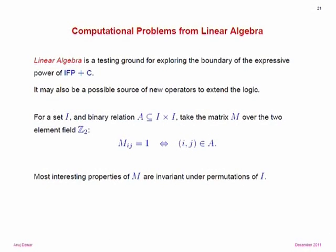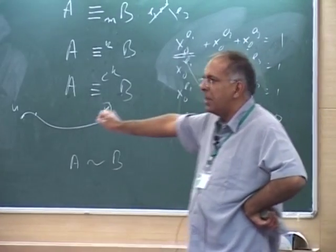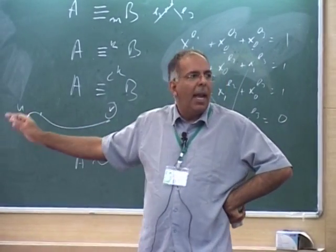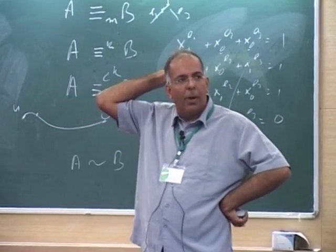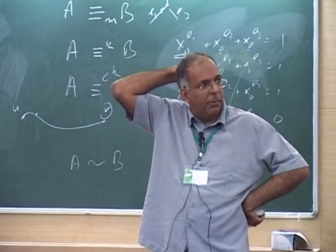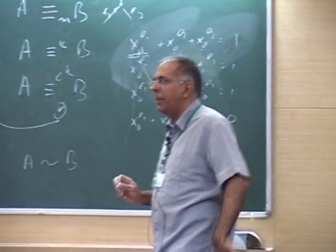I just used the two-element field because it's simple to describe, and it already captures the Cypher-Ehrmann construction. But yes, our result is a bit more general.